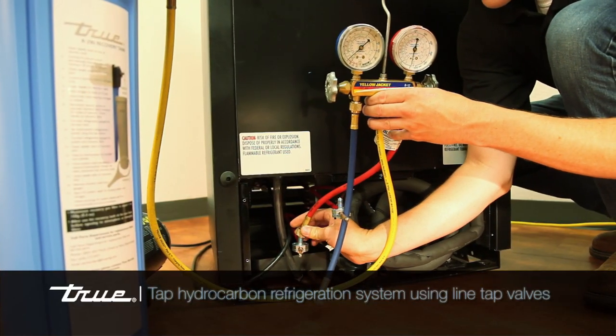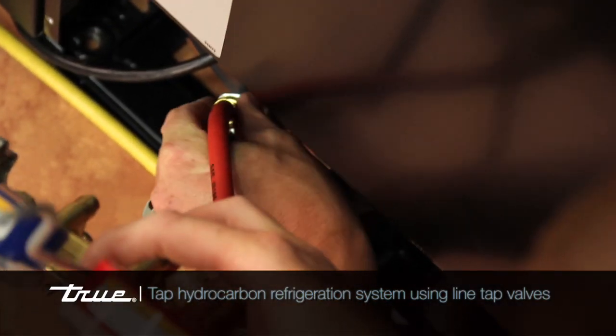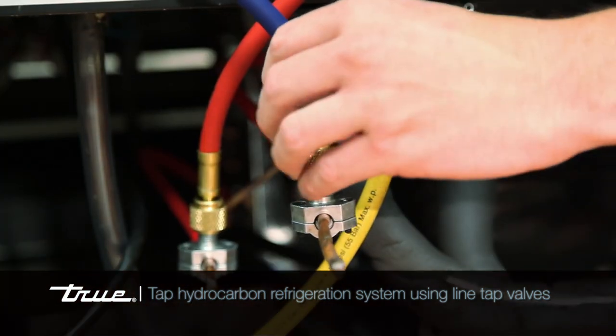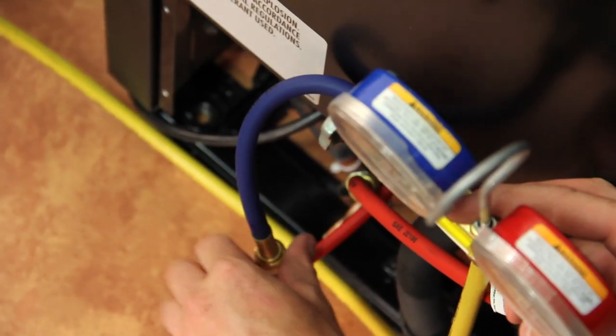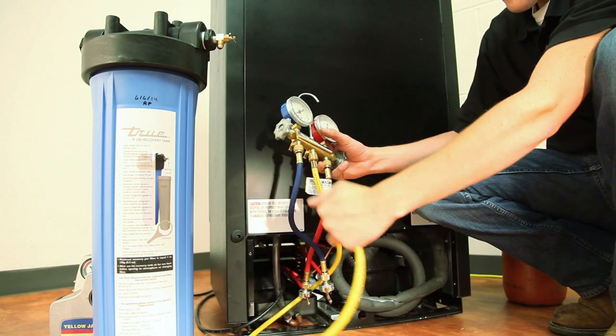You will then tap the system using piercing valves and connect your refrigeration gauges to the high and low sides of the system, and also the recovery tank as shown.